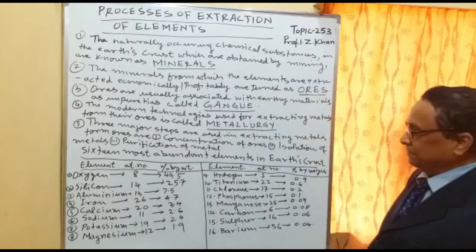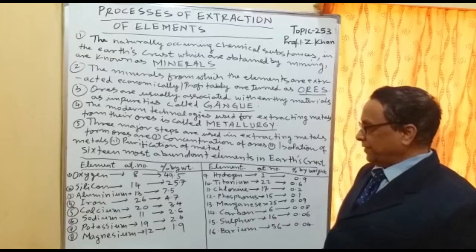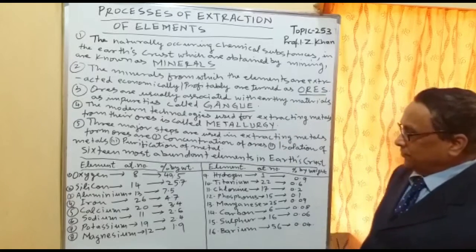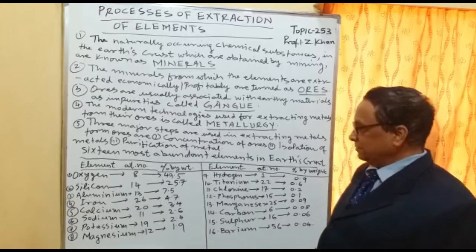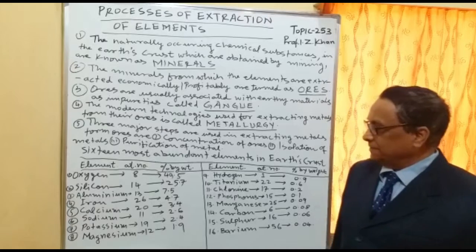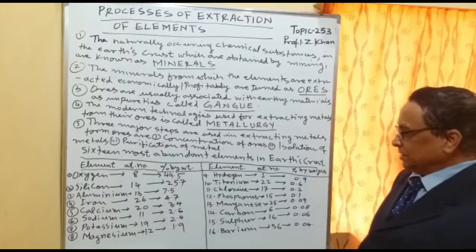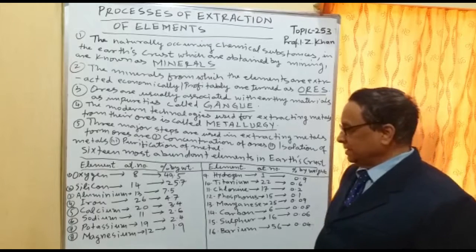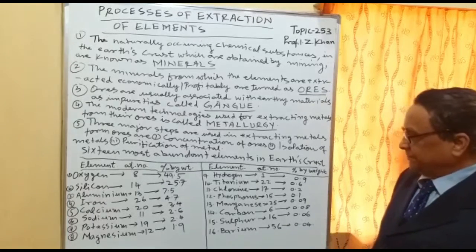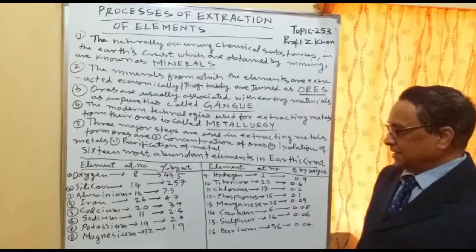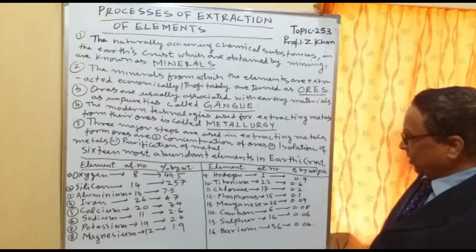Third is aluminum, atomic number 13, 7.5% by weight. Fourth is iron, atomic number 26, 4.7%. Fifth is calcium, atomic number 20, 3.4%. Sixth is sodium, atomic number 11, 2.6%. Seventh is potassium, atomic number 19, 2.4%. Eighth is magnesium, atomic number 12, 1.9%.